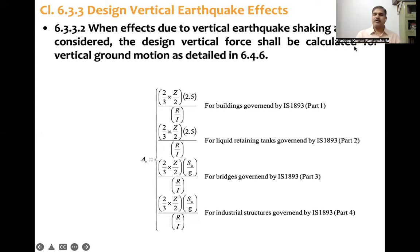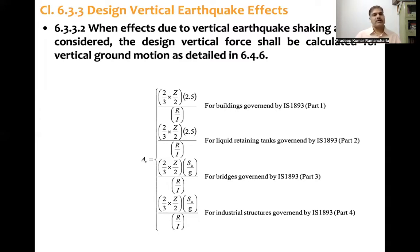This is given for all types of structures — buildings, liquid retaining tanks, bridges, and industrial structures. What it essentially means is: the formula uses z/2 × (i/r) × Sa/g, and the value is taken as a maximum. It shows that two-thirds of the horizontal acceleration coefficient is taken as the acceleration coefficient for the vertical component. In all cases, the factor is 2/3 — so two-thirds of the horizontal component is considered as the vertical component.